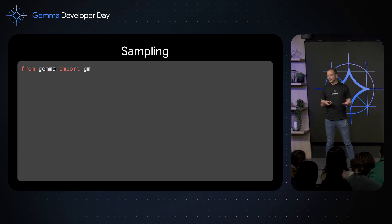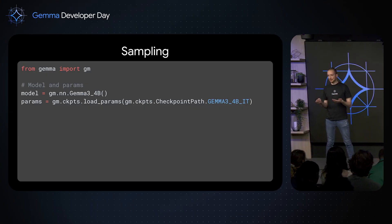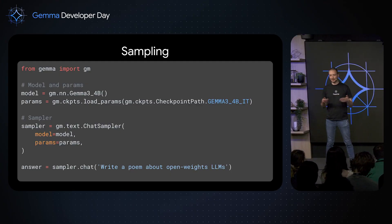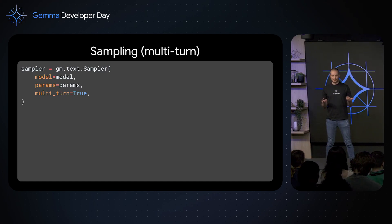Let's look at an example. You start by importing the library and choose one of the Gemma architectures to load parameters. Each of the Gemma models comes in two flavors: the pre-trained version and the instruction-tuned. With a simple interface, you can start querying the model about your last programming problem, or in this case, a beautiful poem about open-weights LLMs.